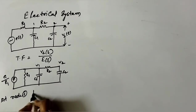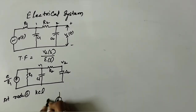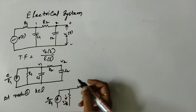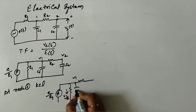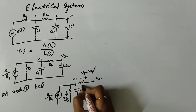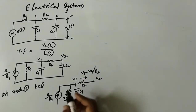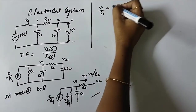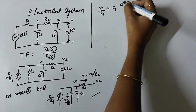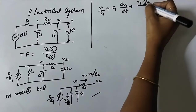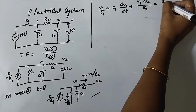At Node 1, we apply KCL. From the voltage-current relationships across RLC elements: V1/R1 + C1 · dV1/dt + (V1 − V2)/R2 = E/R1. This is our differential equation at Node 1.